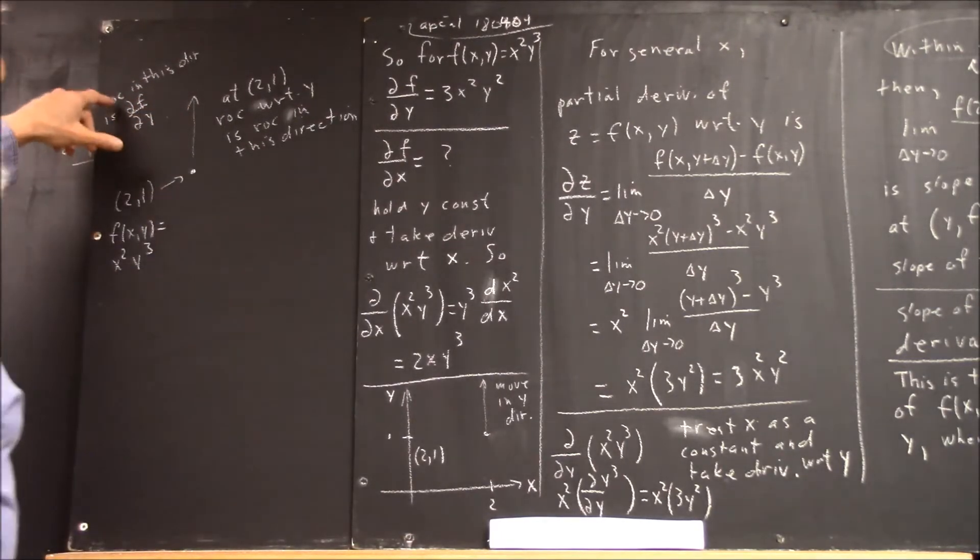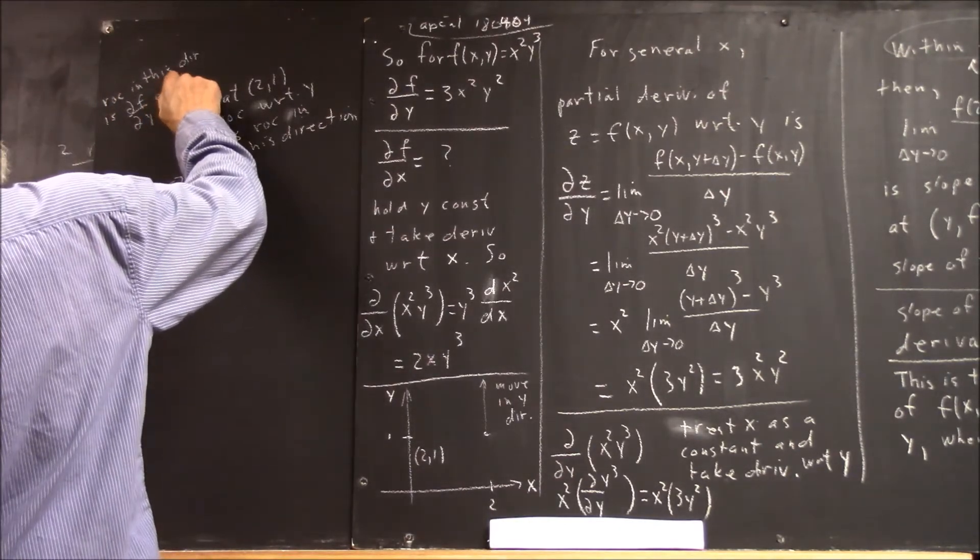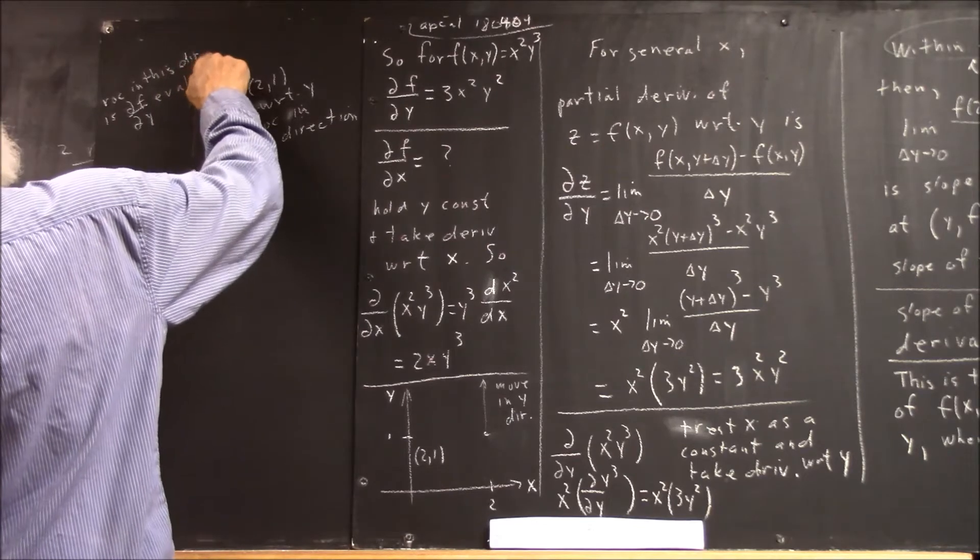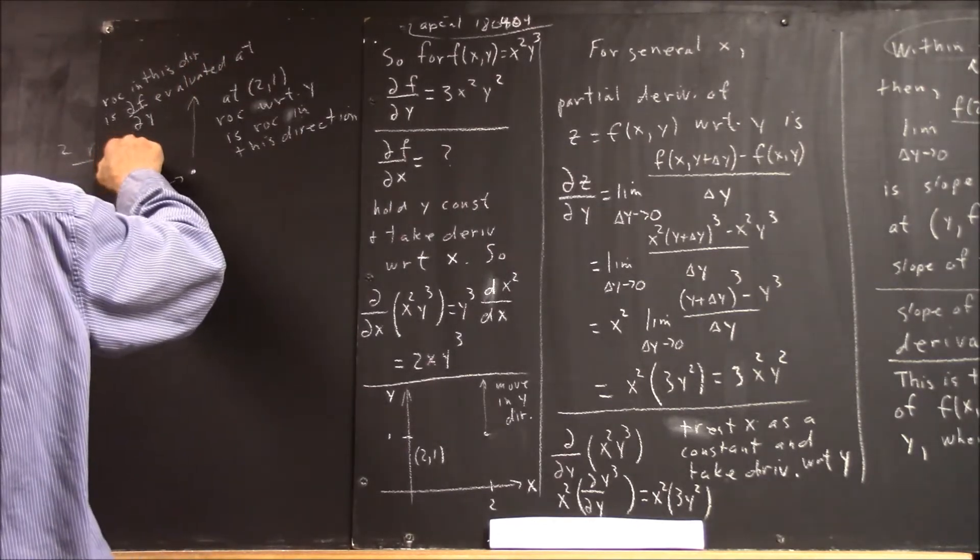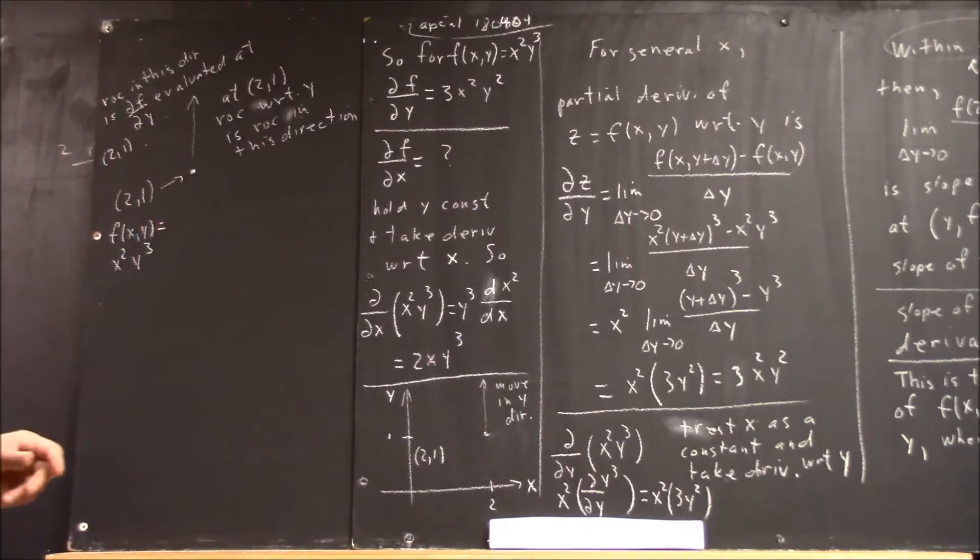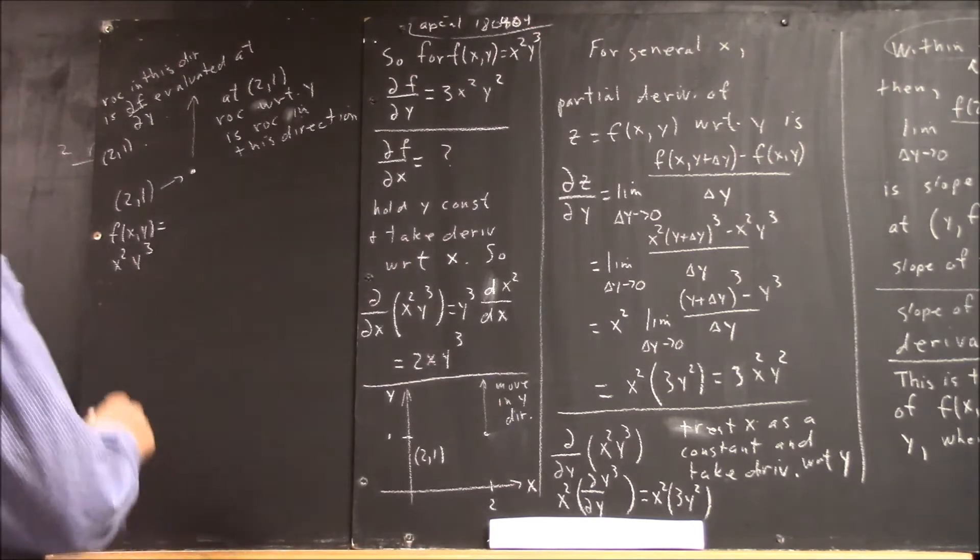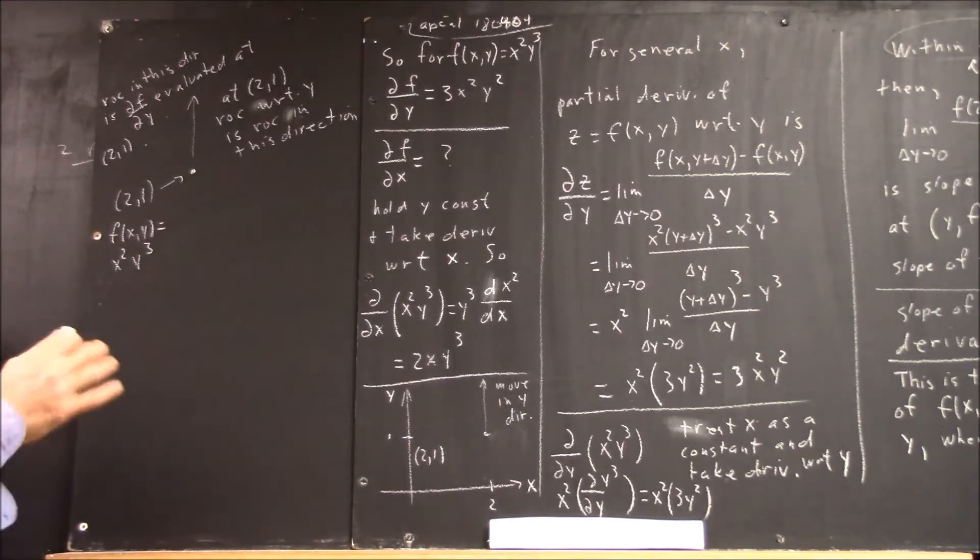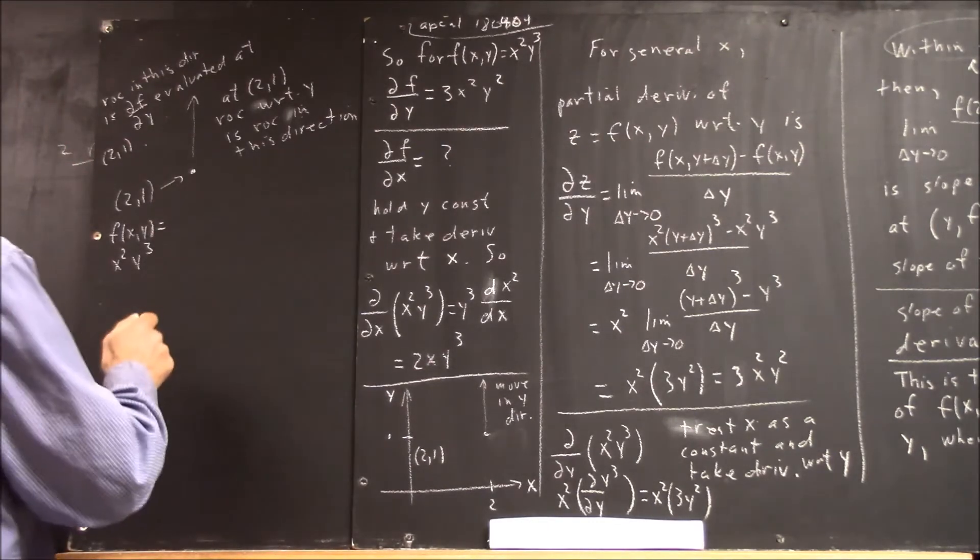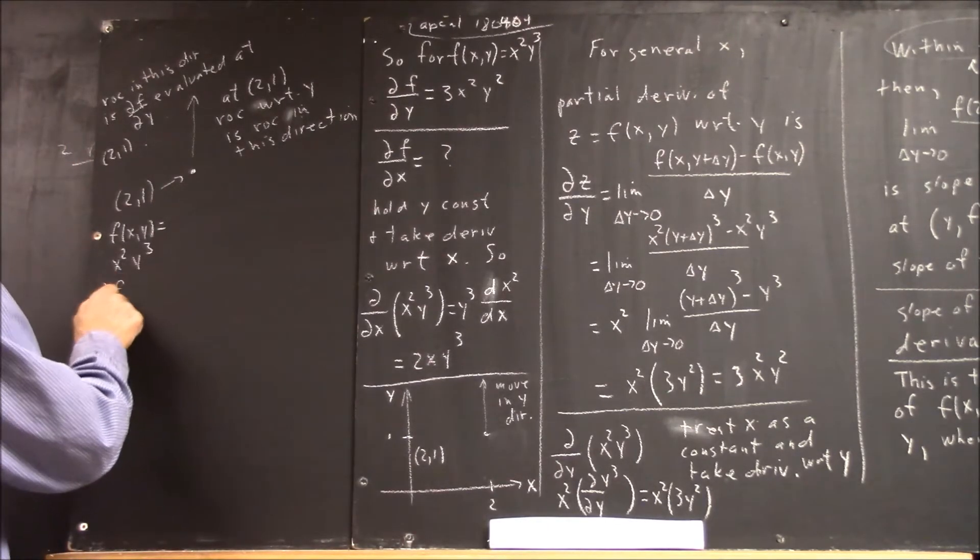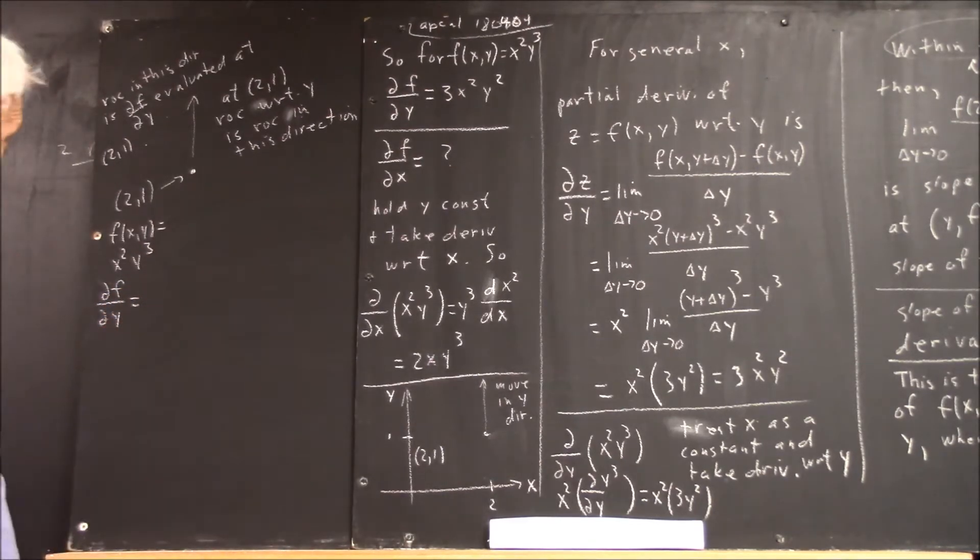Well, it's the partial of f with respect to y evaluated at this point. If you evaluate the rate of change, now there's another notation that I'm going to use. I'll use both notations here. We'll say that partial of f with respect to y as we calculated, but let's think it through again.